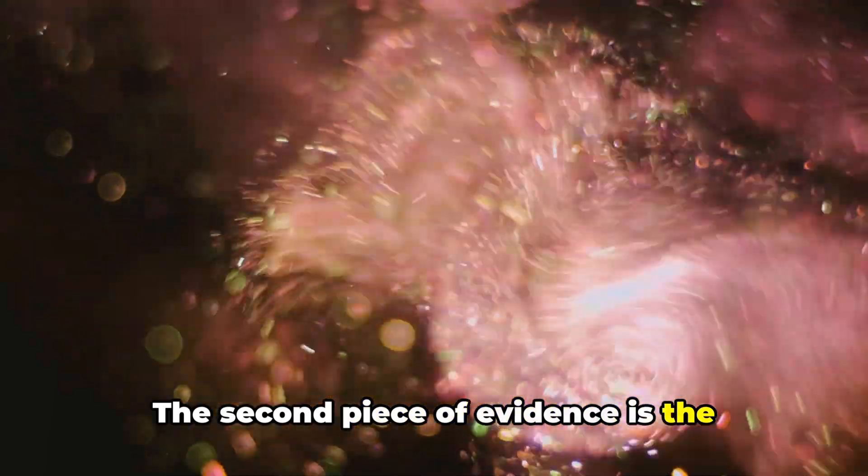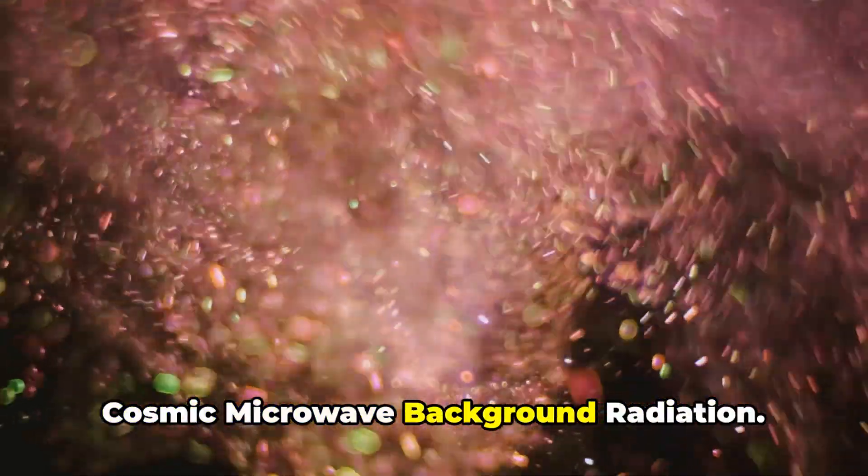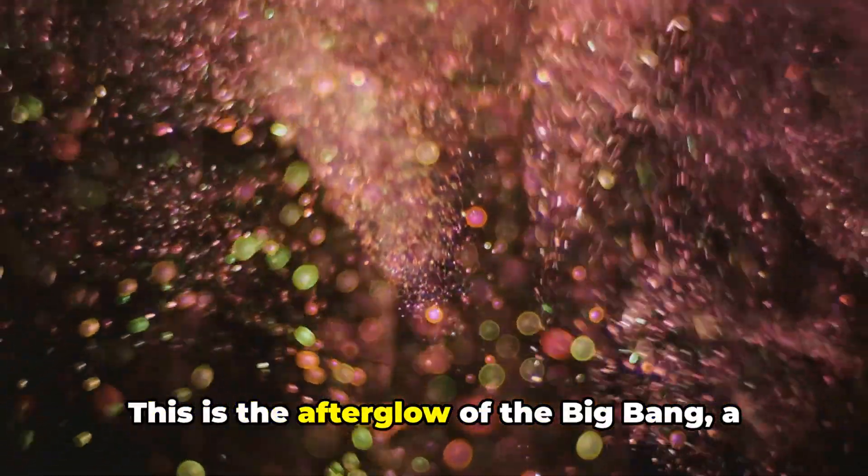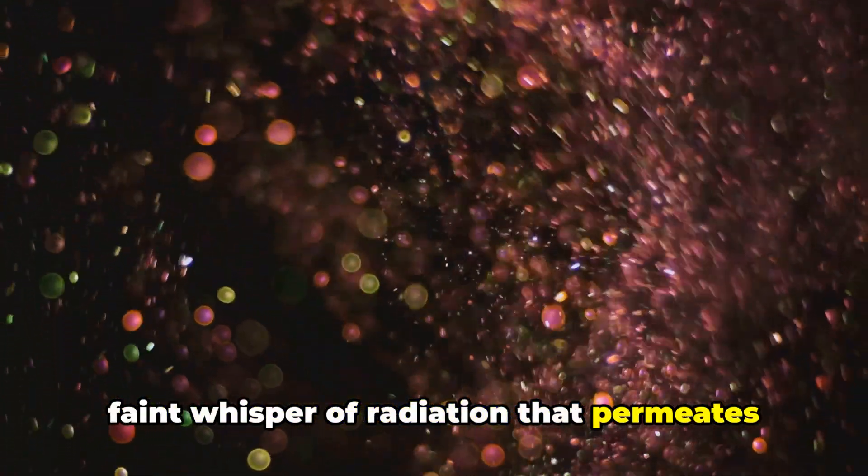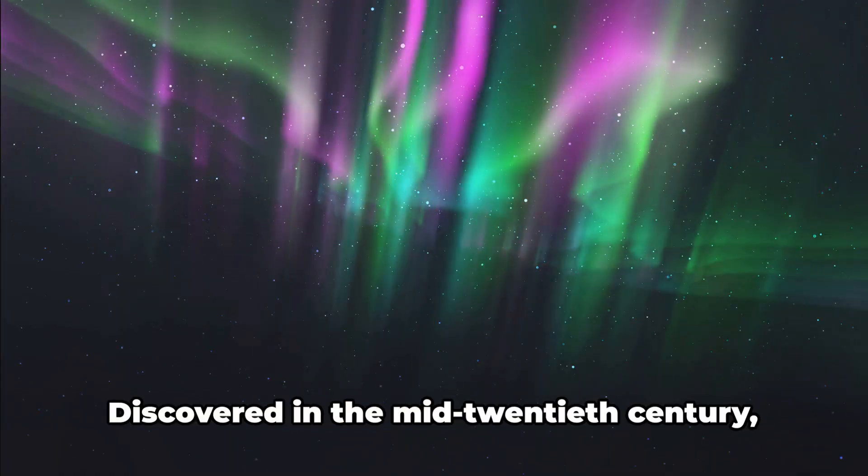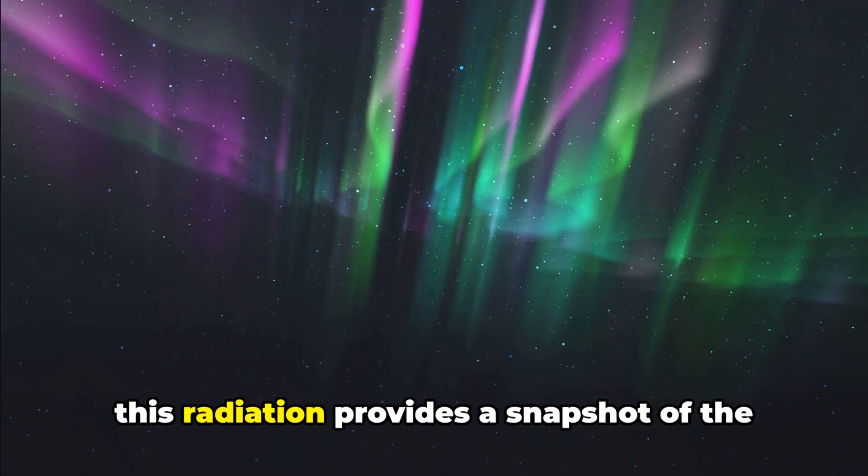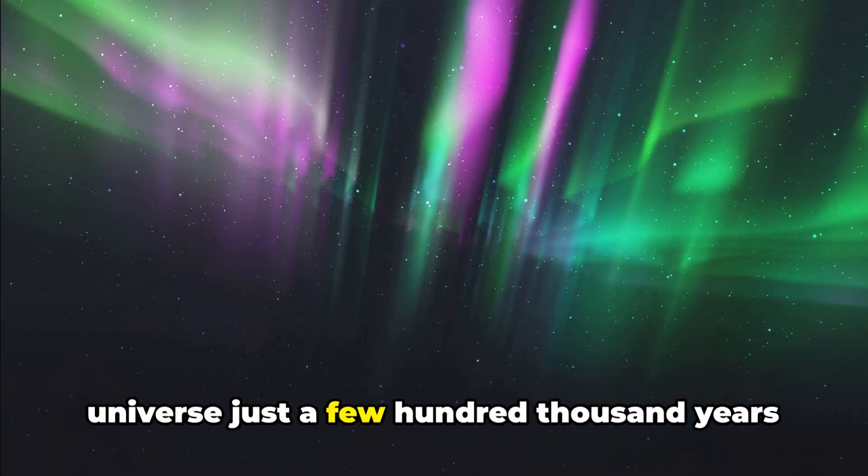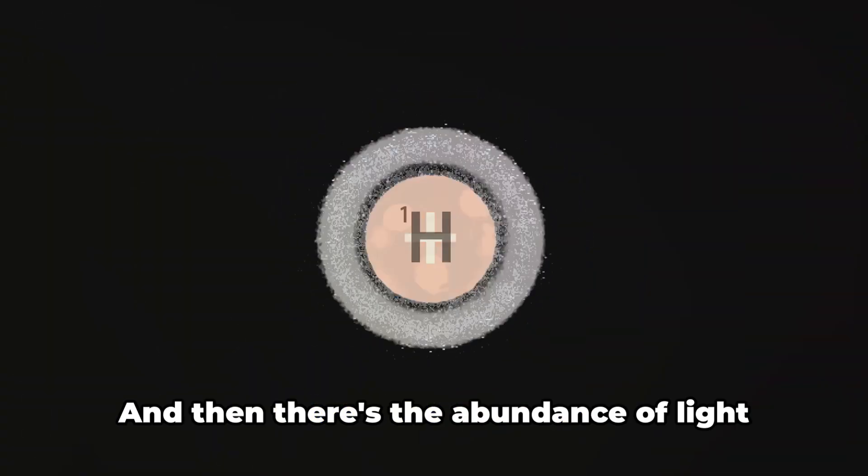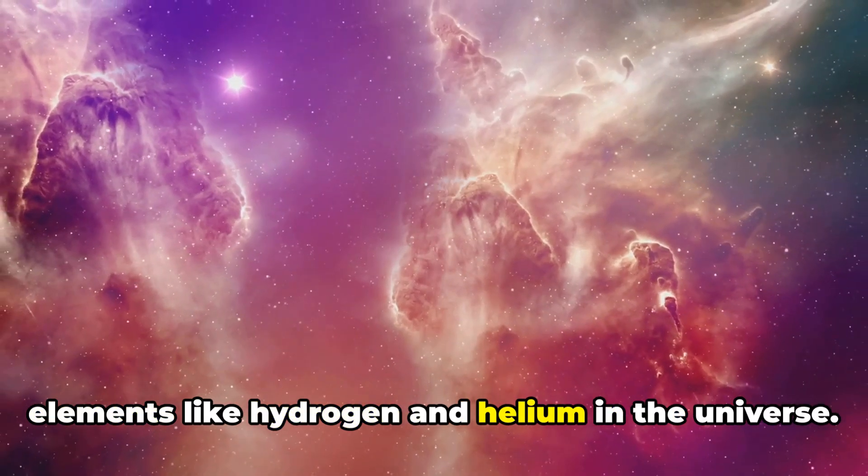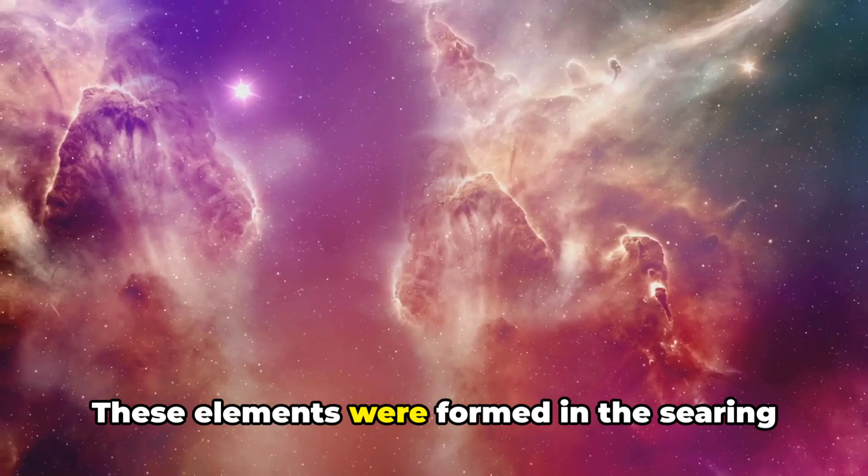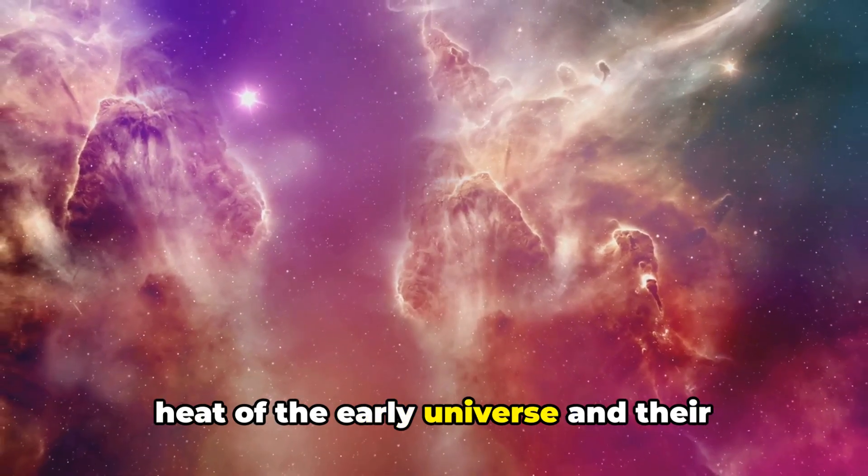The second piece of evidence is the cosmic microwave background radiation. This is the afterglow of the Big Bang, a faint whisper of radiation that permeates the entire universe. Discovered in the mid-20th century, this radiation provides a snapshot of the universe just a few hundred thousand years after the Big Bang. And then there's the abundance of light elements like hydrogen and helium in the universe. These elements were formed in the searing heat of the early universe, and their observed proportions match the predictions of the Big Bang theory.